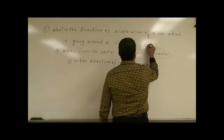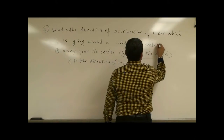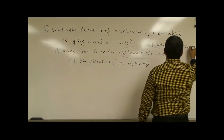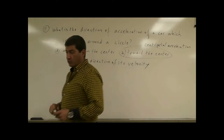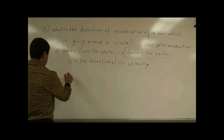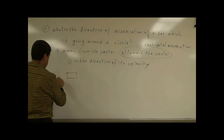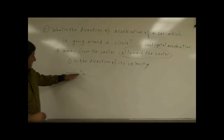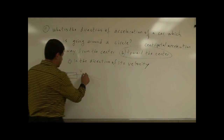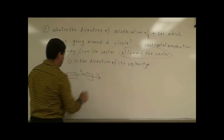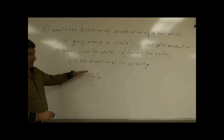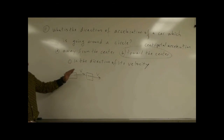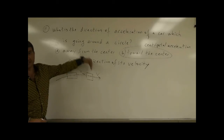This is known as centripetal acceleration. Let's try to understand what's happening here and why it is towards the center. If a car is going around the turn, its velocity is pointing in one direction, and an instant later the velocity is going to be pointing in a different direction. So the velocity has gone from pointing this way to this way, and we notice that the direction of the velocity tends to be changing kind of downward.